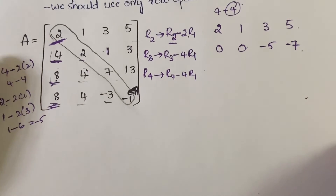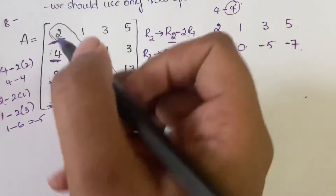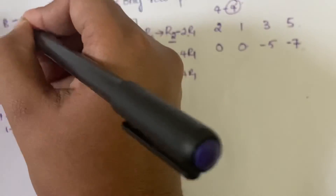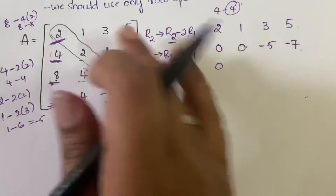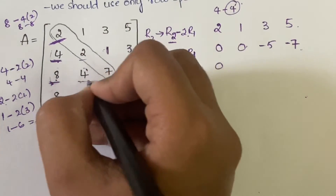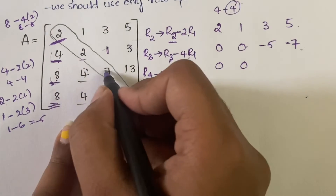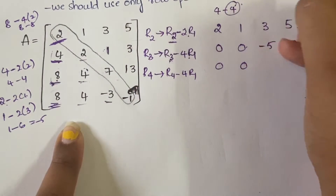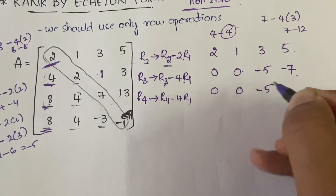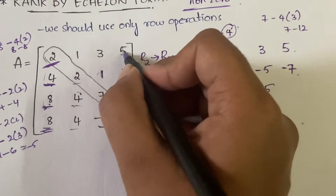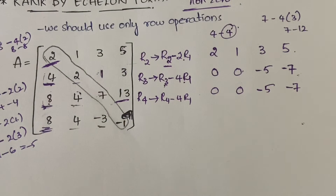For R3 (R3 minus 4*R1): 8 minus 4 into 2 = 8 minus 8 = 0; 4 minus 4 into 1 = 4 minus 4 = 0; 7 minus 4 into 3 = 7 minus 12 = minus 5; 13 minus 4 into 5 = 13 minus 20 = minus 7. So R3 is now [0, 0, minus 5, minus 7].